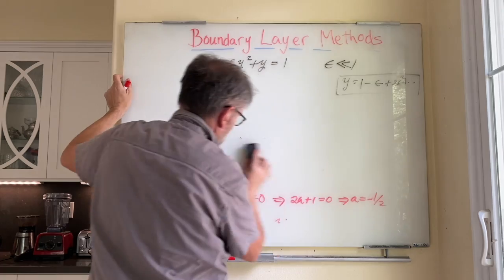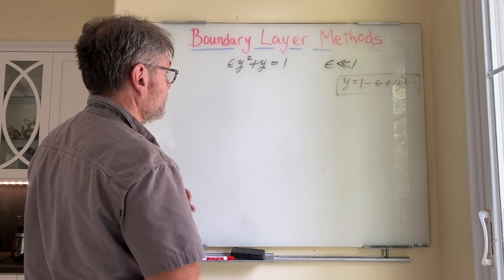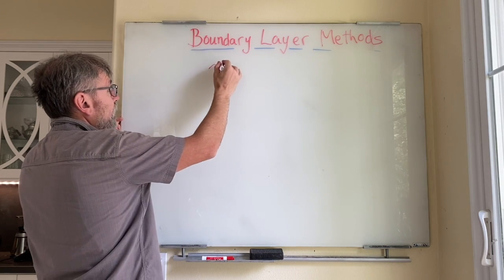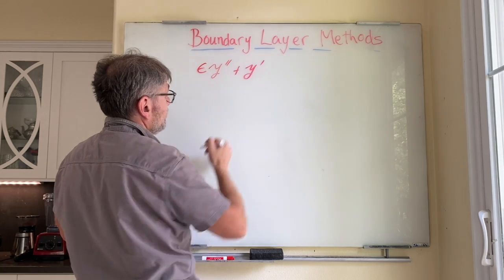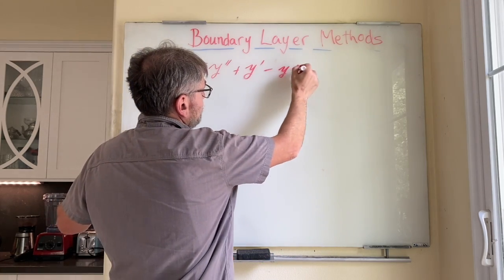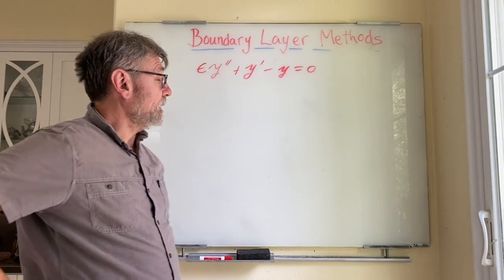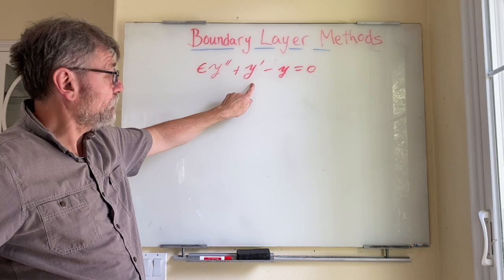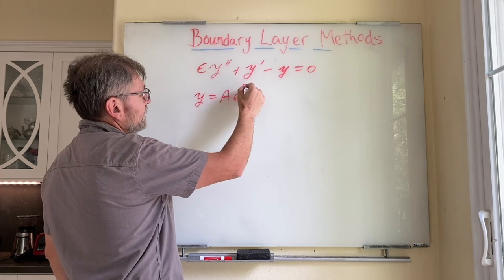This is going to be relevant to differential equations. Suppose I have the following differential equation: y double prime plus y prime plus y equals zero. This is a constant coefficient linear differential equation — linear in all the terms of y or derivatives of y — and so the solution is going to be of the form y equals ae to the lambda x.